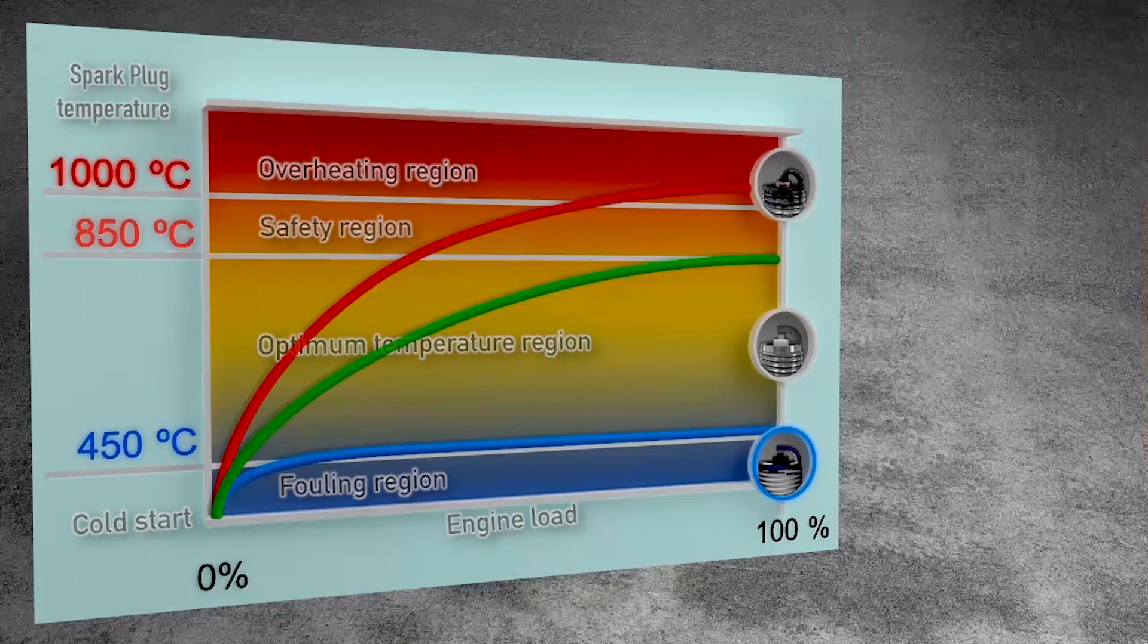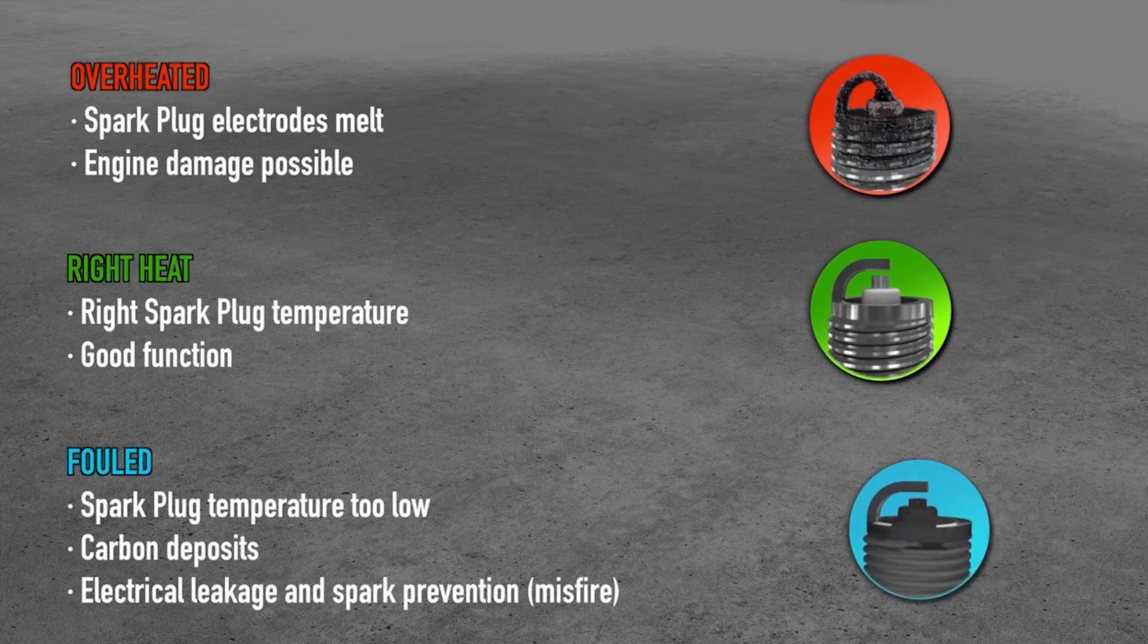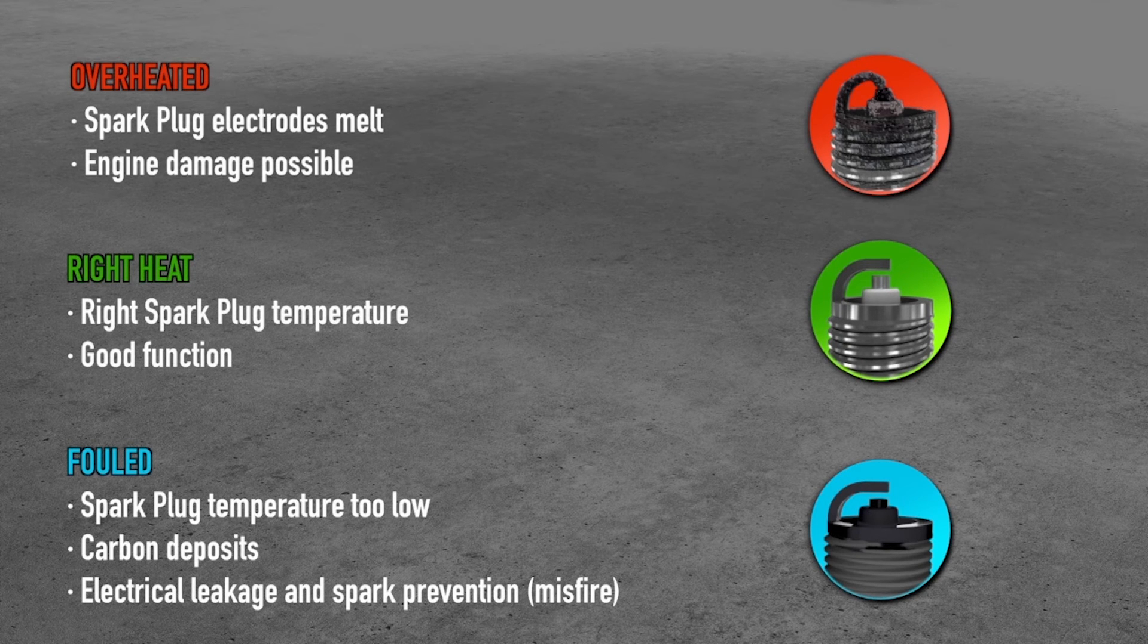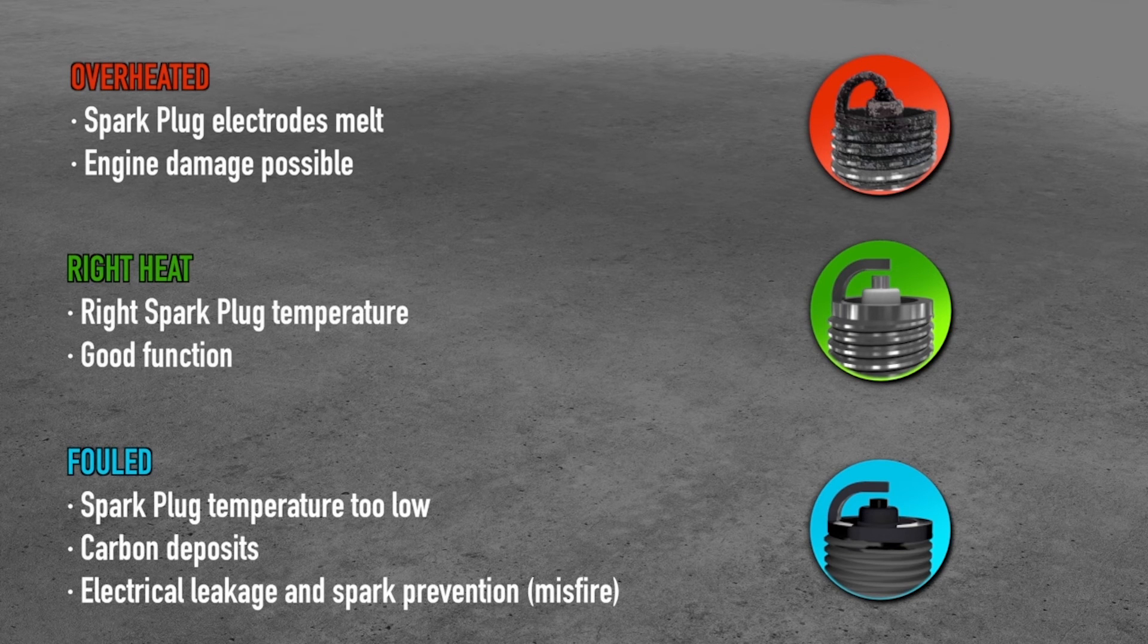In summary, when a spark plug is overheated, it may cause the electrodes to melt and possible engine damage. When a spark plug is operating within the optimum temperature range, the spark plug will perform normally. When a spark plug does not reach the minimum operating temperature, carbon deposits will form on the plug, resulting in misfire.